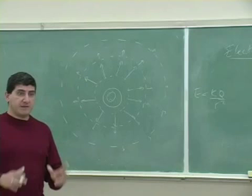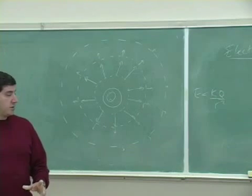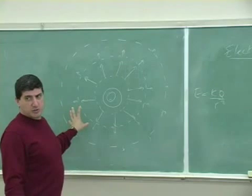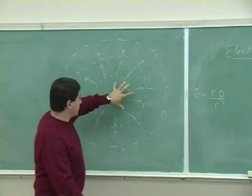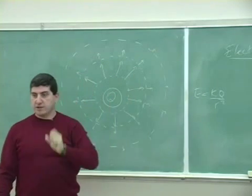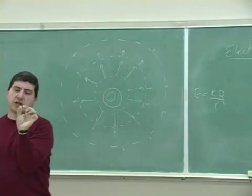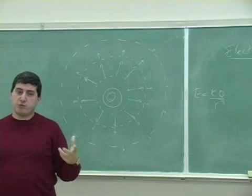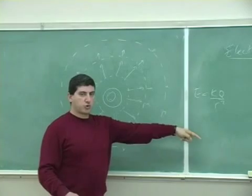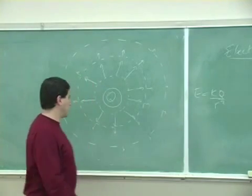But when we draw electric field distribution of a charge, we usually don't draw it this way because it's a little too cumbersome. We don't draw certain distances and the electric field vector describing its magnitude. The way we do it is a little bit quicker. We just draw a straight line through all those vectors like this.